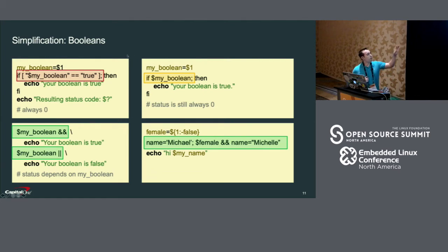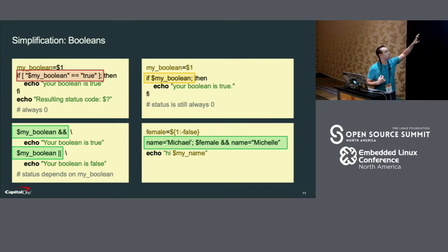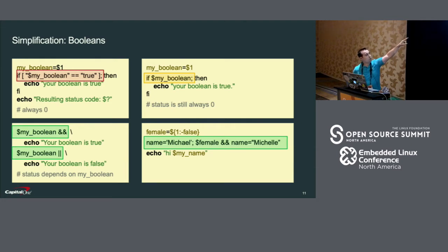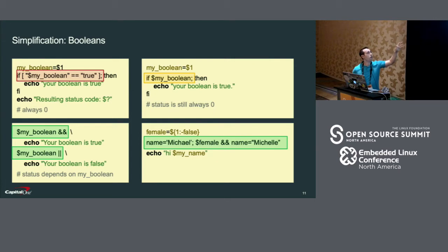In the bottom left, we have another simplification. We see that we don't even need the if construct here — I just removed it completely and replaced it with double ampersands. This statement is just as good as the if block above it, and I make this substitution all the time in my own code. So it's like: if that Boolean is true, then you're going to echo 'your Boolean is true'.